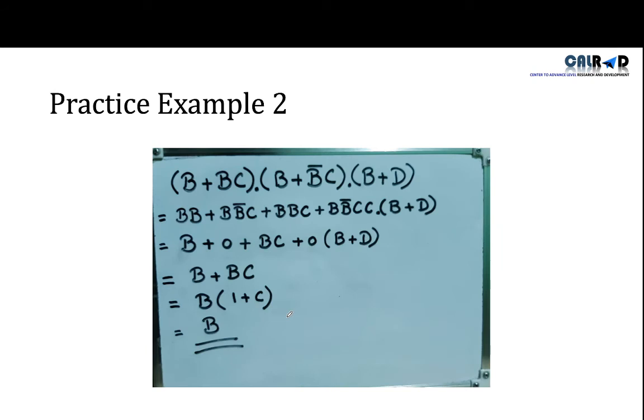The second example was (B plus BC) into (B plus B dash C) into (B plus D). What we do? First of all, we will multiply these two. We will multiply B with this and BC with this. So this is our multiply simplification and B plus BD will remain same. Now as per rules, you know A into A is equal to A. So B into B is equal to B. This is the rule. When you will do, you will do step by step and you have to write which rule you are using. Now B into B dash that is equal to 0 as per Boolean algebraic rule. So if it is 0, then 0 into C is 0.